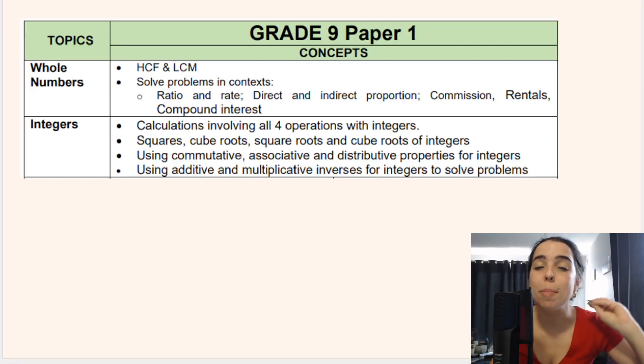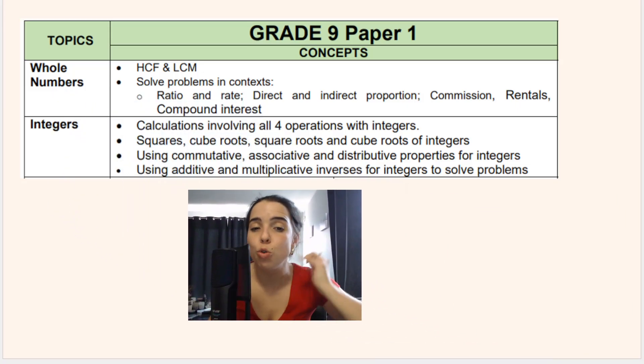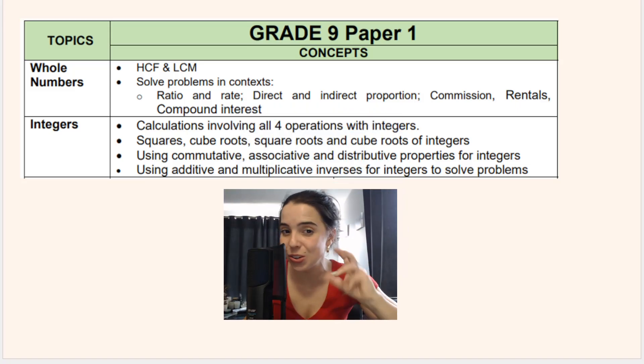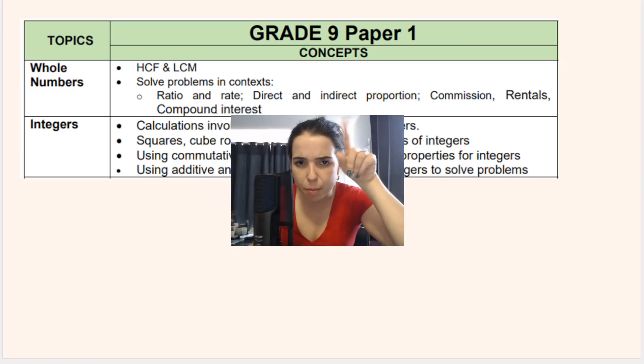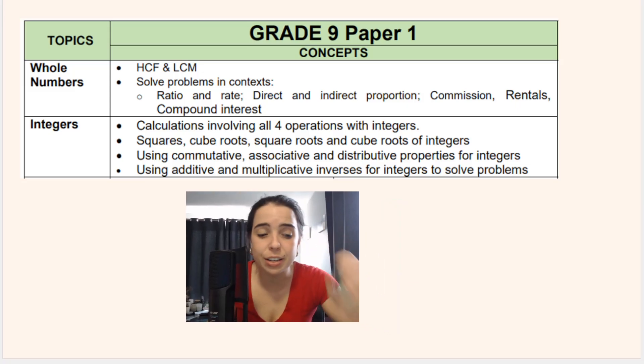Starting off with paper one concepts or topics. We've got whole numbers. So this includes everything from HCF and LCM, ratio and rates, direct and inverse or indirect proportion. I do have videos of this on my channel, so you can go watch those. We've also got everything involving finance. So finance is quite a lot, but they pretty much summarize it quite a bit here. So everything that has to do with financial math. Then we've got everything that has to do with integers.